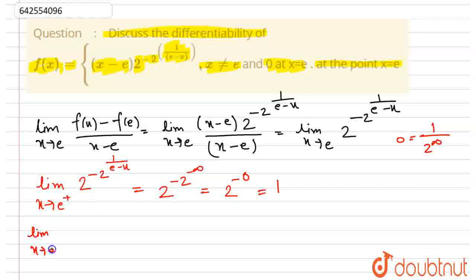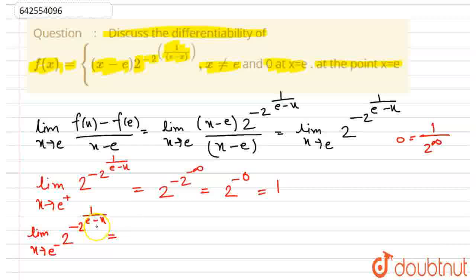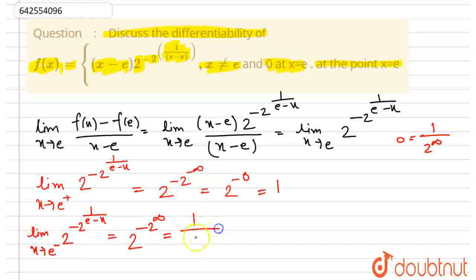Now the left-hand limit as x goes to e from the left of 2 to the power of minus 2 to the power of 1 upon (e minus x): as x goes to e from the left, 1 upon (e minus x) goes to plus infinity. So that equals 2 to the power of minus 2 to the power of infinity, which equals 1 upon 2 to the power of 2 to the power of infinity, which equals 1 upon 2 to the power of infinity. Since the denominator is extremely large, this equals 0.